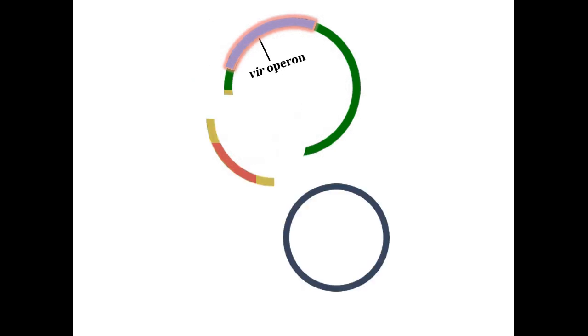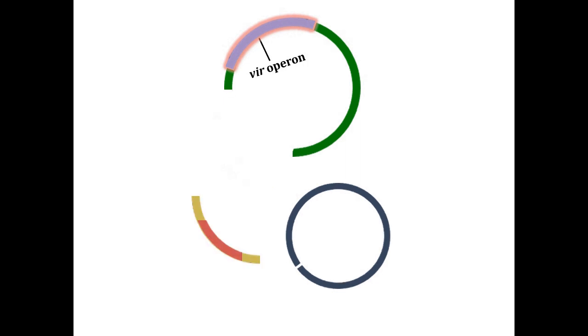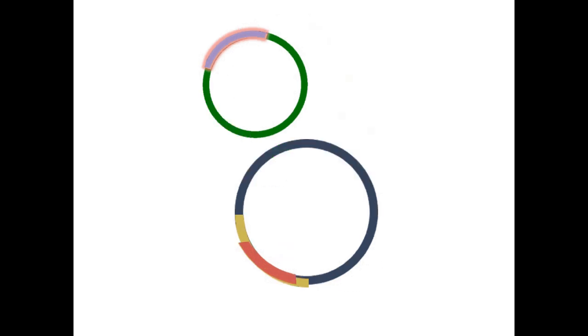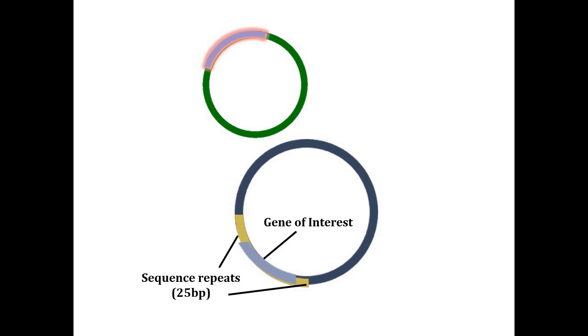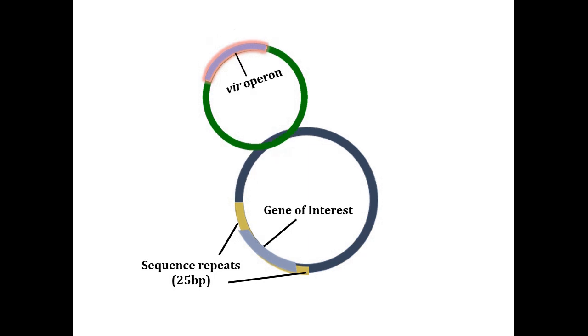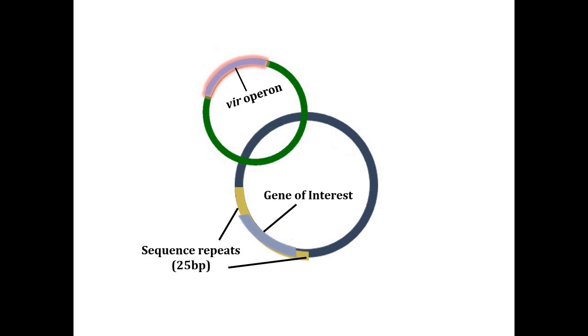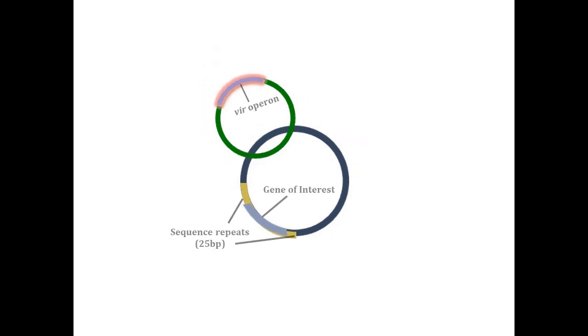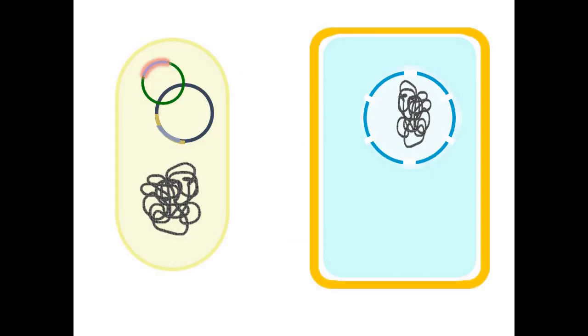Plant biotechnology researchers have adapted agrobacterium to genetically engineer a wide variety of plants, including both monocots and dicots. In this procedure, the T-DNA is placed on another plasmid that is more easily manipulated, and the DNA between the flanking region repeat sequences is replaced by the gene of interest. Upon infection, the virulence system induces transfer of T-DNA into the plant cell, allowing integration of the recombinant gene without tumor induction or opine production.